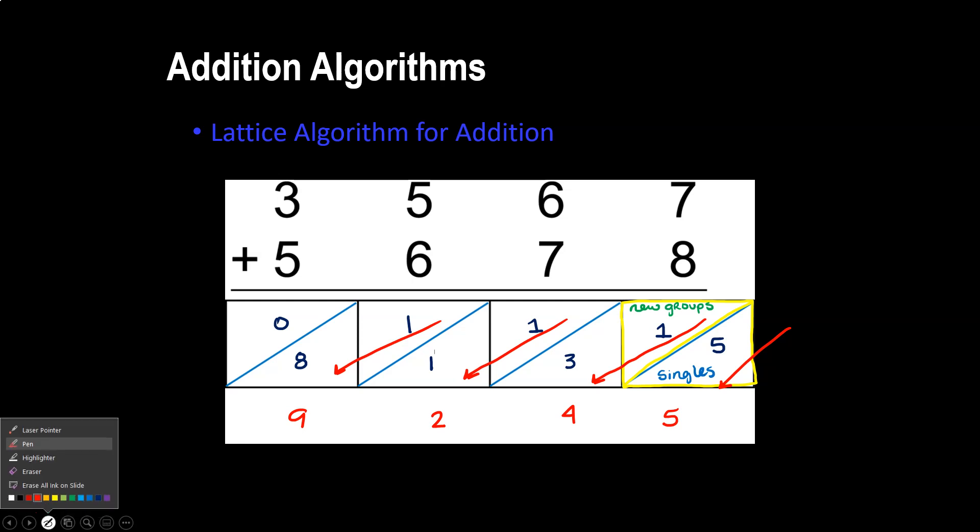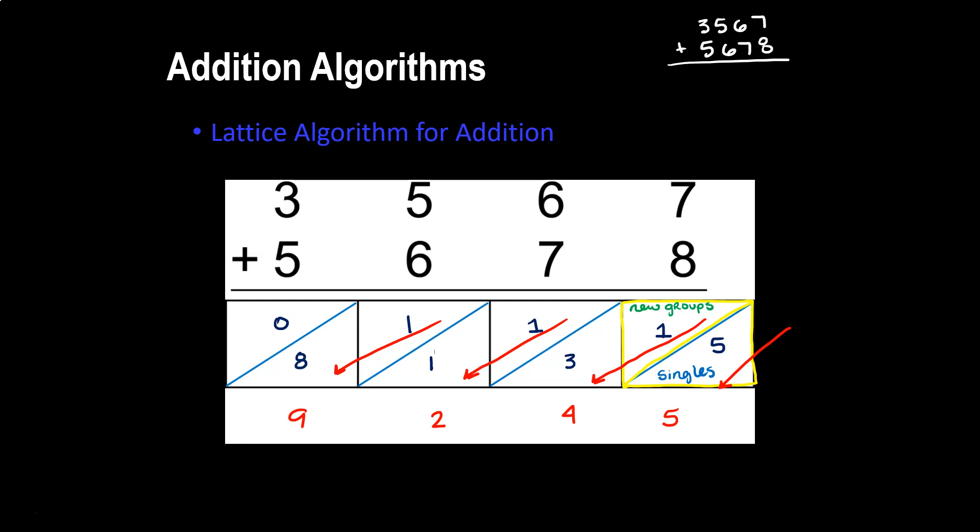Of course we can do this using the standard algorithm. But I want to remind you there are a lot of things that are not written out. 7 plus 8 is 15, carry the 1. 6 plus 7 plus 1 is 14, carry the 1. 1 plus 5 plus 6 is 12, carry the 1. 5 plus 3 plus 1 is 9.